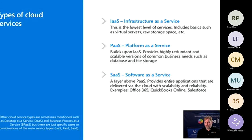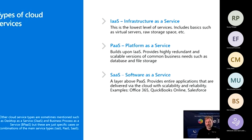You sometimes hear people refer to other kinds of cloud services, like Desktop as a Service or Business Process as a Service. But most of the time, those are really just specific use cases or specific configuration cases of one of these three main types of cloud services, or some kind of combination of them. Most any cloud service can really be broken down into one of these three or some combination.